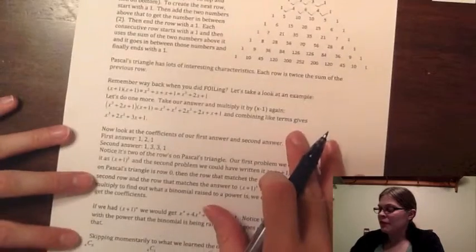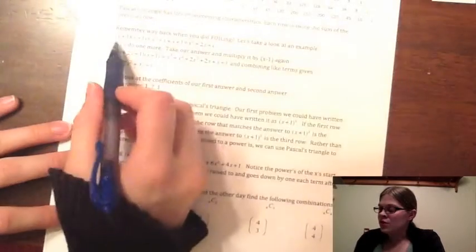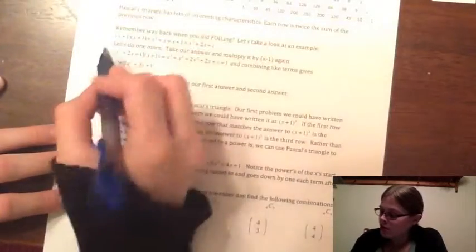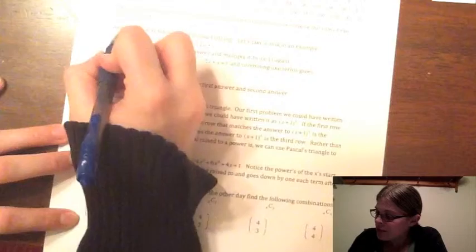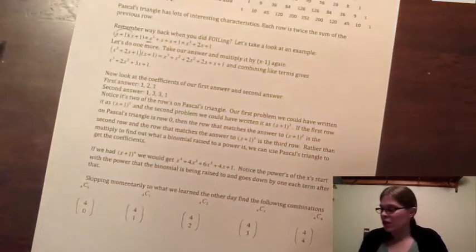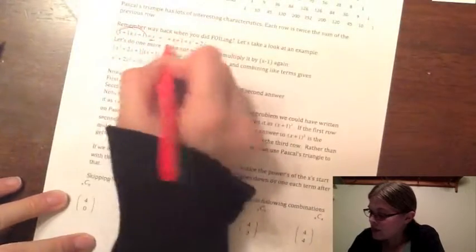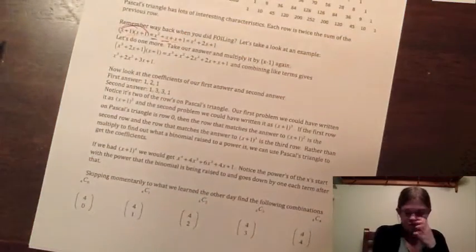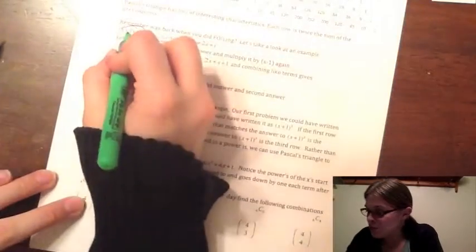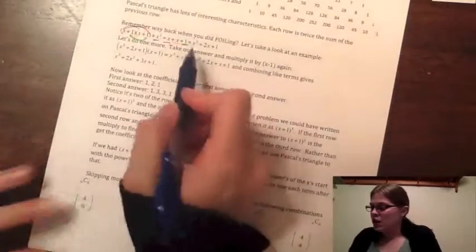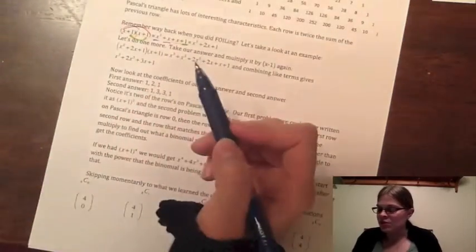So if we take a look at foiling — way back in the day we foiled or distributed. So we have our x times x, which gave us x squared, then x times one, which gave us x, and then the other one times x, which gave us x, and then one times one, which gave us one. So it translates to x squared plus two x plus one, because the x's are like terms.